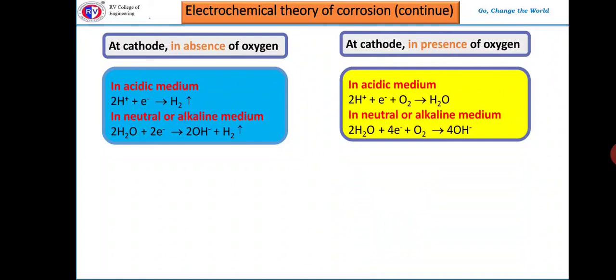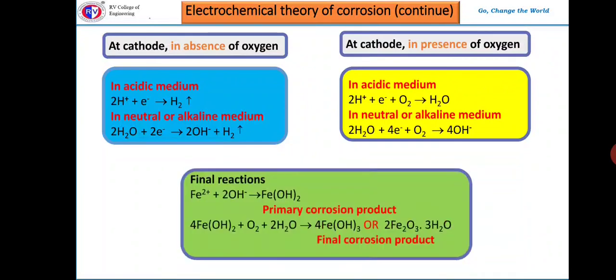Now let us see some of the final reactions. Iron ions formed at the anode will combine with the hydroxide ion to convert into ferrous hydroxide, which is the primary corrosion product which is unstable. Immediately in presence of oxygen and water it gets converted to final corrosion product, that is iron oxide or Fe2O3·3H2O. This is the final corrosion product when an iron metal is exposed to corrosion environment.